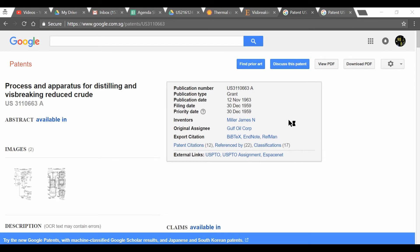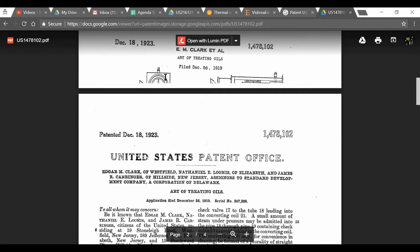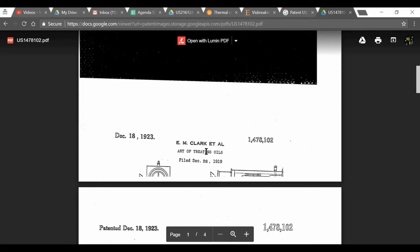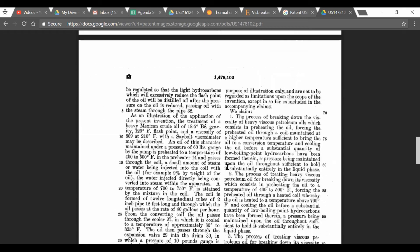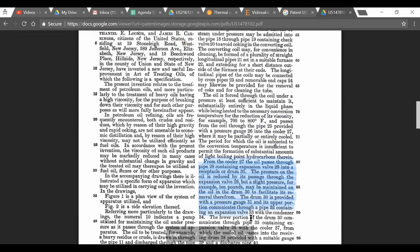Now I want to tell you more about some further reading you can take a look at for the visbreaker. So this is the original patent I was talking about, US 1478102A. It's called The Art of Treating Oils, and this was one of the earliest visbreaker patents. You can view the PDF here. What you'll notice is there's absolutely no diagrams. The diagram is not being scanned properly. What you've actually seen in the video was a sketch of the diagram based on the process that's being described in this patent. You can go and read it more over here.